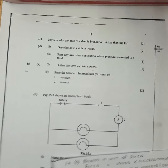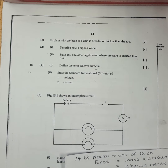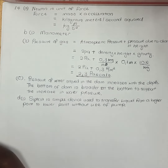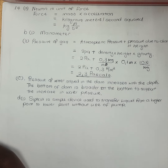We are also supposed to describe how a siphon works. A siphon is a simple device used to transfer liquid from a higher point to a lower point without using a pump. It works by using atmospheric pressure to push liquid from a higher point to a lower one. When liquid is pulled down by gravity, it creates a vacuum that pulls liquid up and over the top of the siphon and into the lower container.